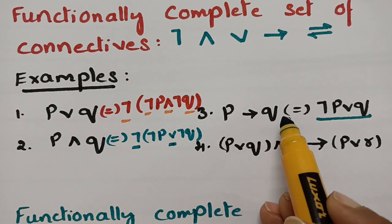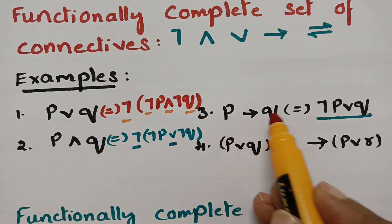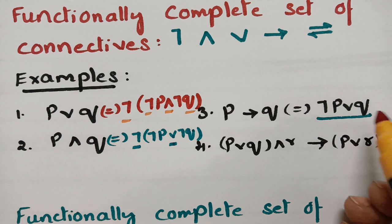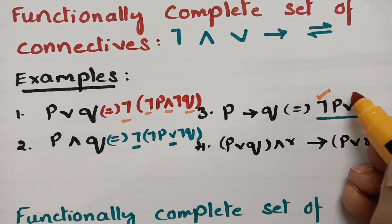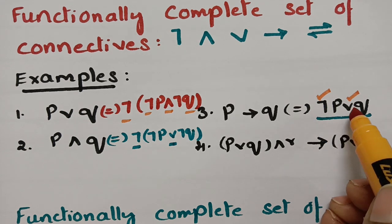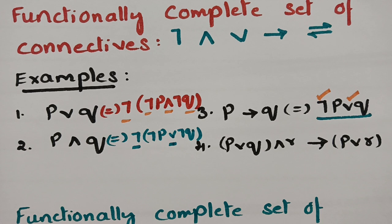Now consider P→Q. In P implies Q, the equivalent statement is negation P ∨ Q. If you observe, this contains negation and disjunction. So the set {negation, disjunction} is called a functionally complete set of connectives.